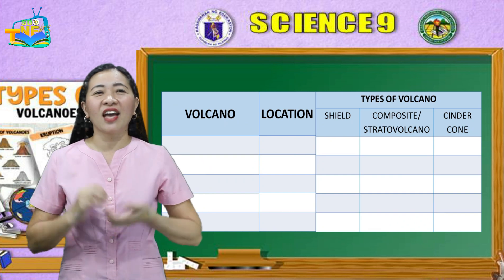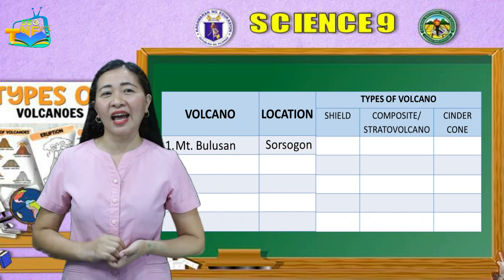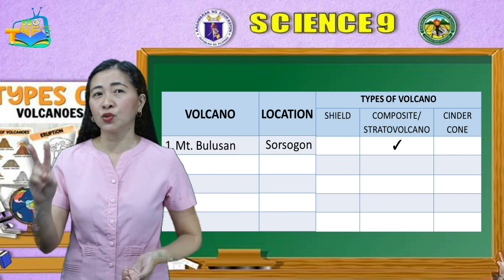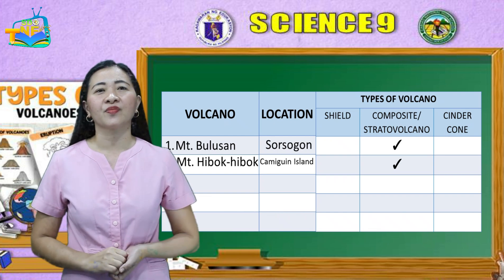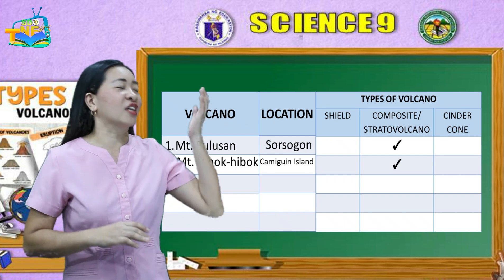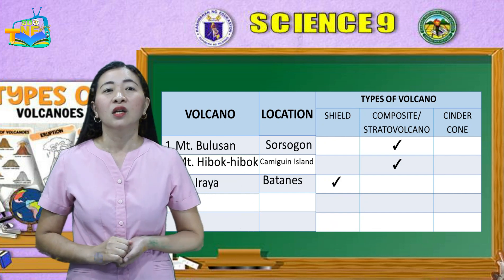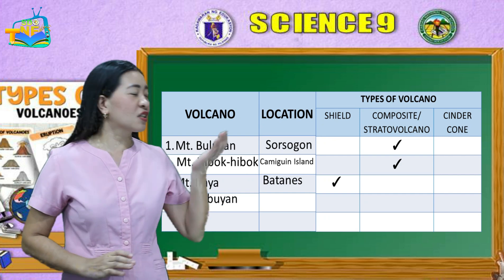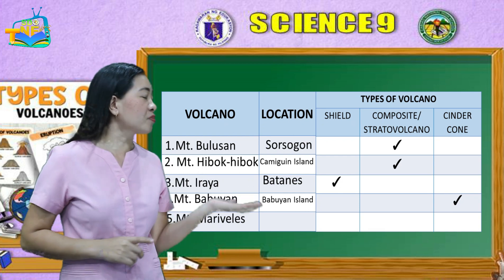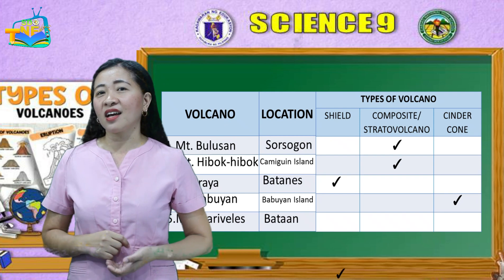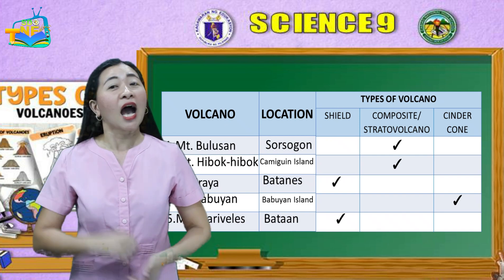Now let's take a look at your answers. Number 1: Mount Bulusan, located in the province of Sorsogon — it is classified as a stratovolcano. Number 2: Mount Hibok-Hibok. It is located in Batan Island in the province of Batanes, and this volcano is classified as a shield volcano. Number 4: Mount Babuyan, located in the Babuyan group of islands — classified as a cinder cone volcano. The last is Mount Mariveles in Batan, classified as a shield volcano. If these are your answers, then you are spectacular — I am impressed with your progress.